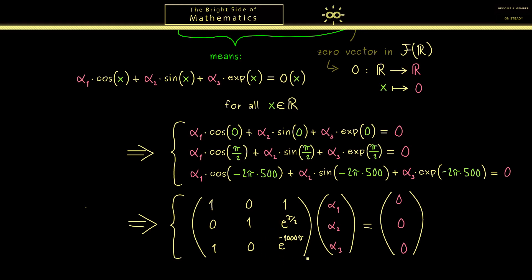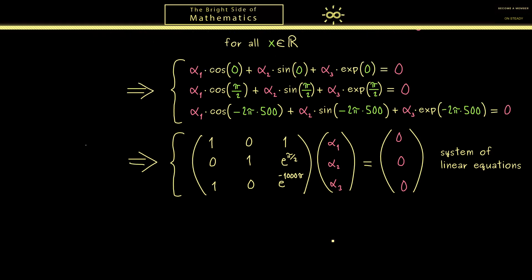Now of course we don't need to know the exact value here. We just need to know it's very small. Because now we can ask the question, is this system of linear equations uniquely solvable? And if it is, we already know it only has one solution, namely the trivial one. And then we would conclude that all the alphas have to be zero. Okay, at this point you should recall from linear algebra, a 3 times 3 system is uniquely solvable if and only if the determinant of the matrix is non-zero.